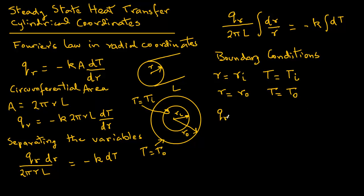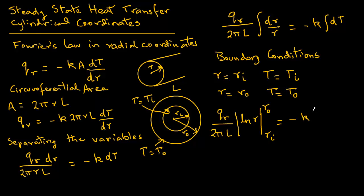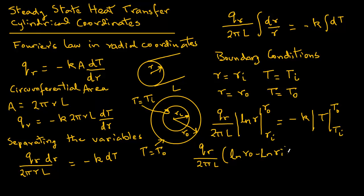We go ahead and evaluate the integrals. We have Q_R divided by 2πl, and from calculus the integral of dr over r is the natural log of r, evaluated from r_i to r_o. On the right-hand side we have minus k, and the integral of dT is T, evaluated from T_i to T_o. So we have Q_R over 2πl times ln(r_o) minus ln(r_i), and on the right-hand side minus k times (T_o minus T_i).